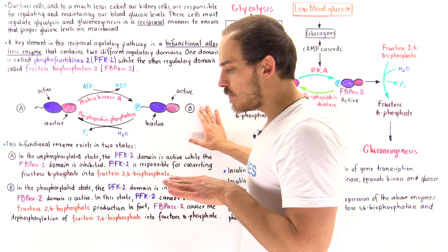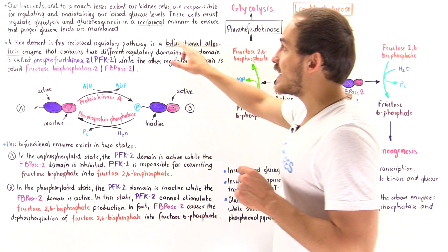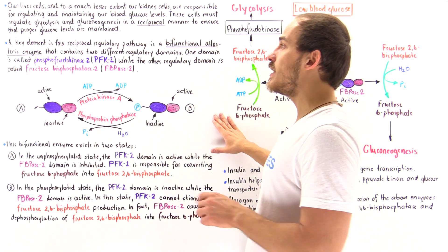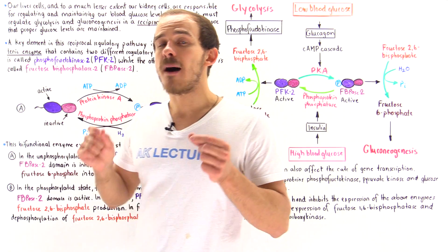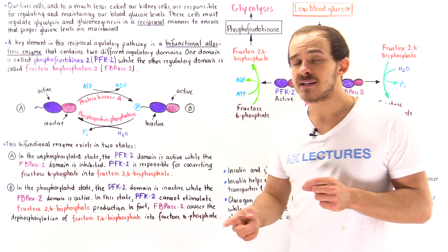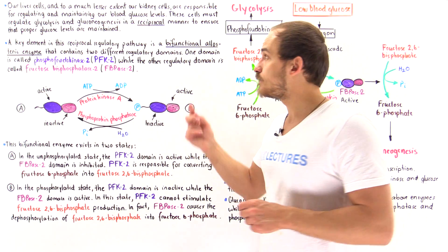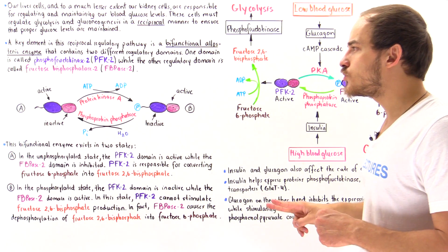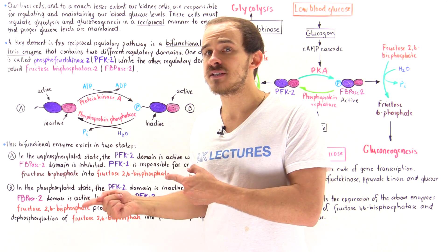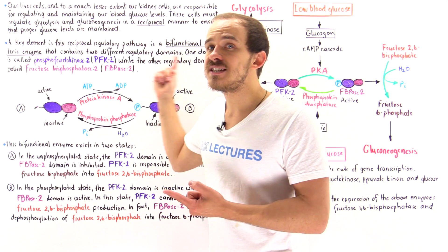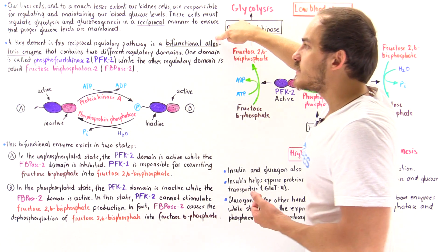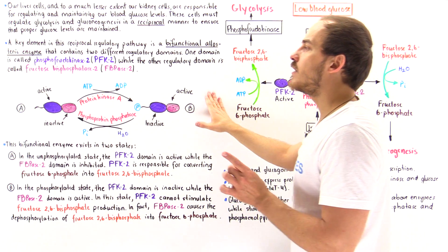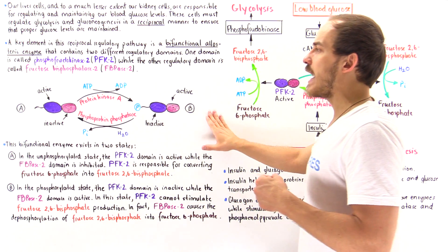The key element in this regulatory pathway — which is a reciprocal regulatory pathway — is a bifunctional allosteric enzyme that contains two different types of domains. Bifunctional simply means it has two different, essentially opposite functions, and that's why we call it reciprocal. Allosteric means it contains special sites that can bind allosteric effector molecules that can affect the activity of that protein.